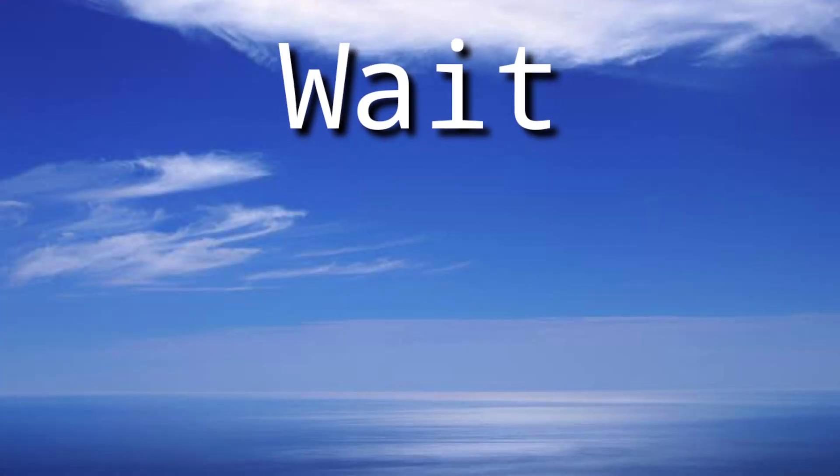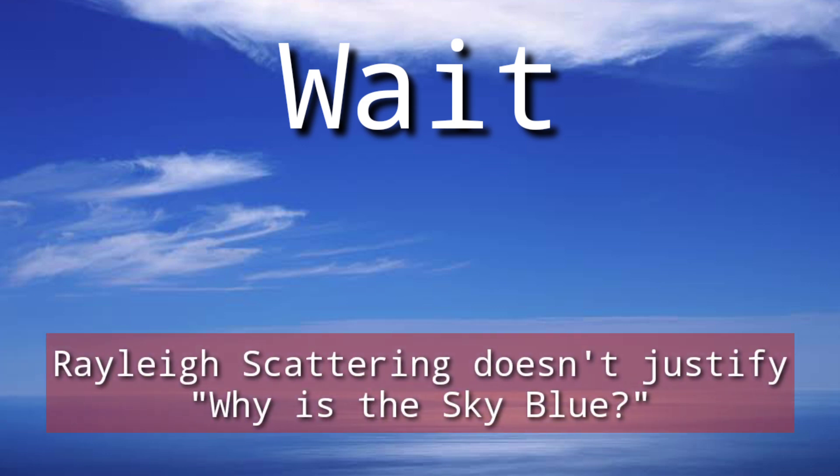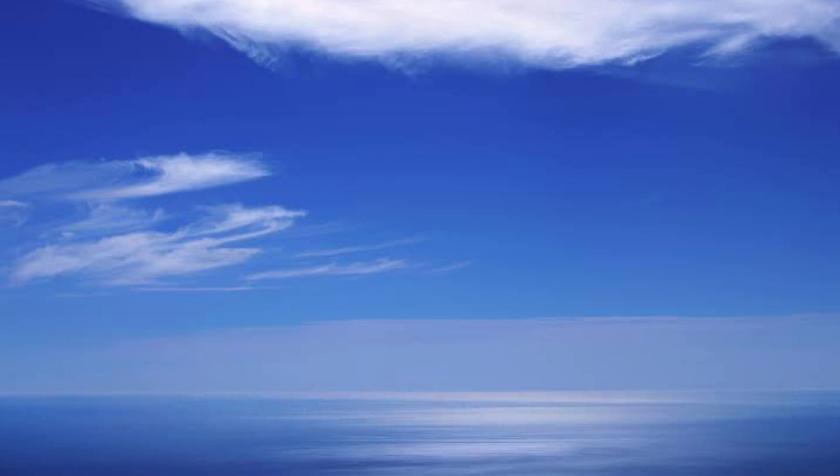Wait, this isn't the whole story. Rayleigh scattering still doesn't justify why the sky is blue. In fact, violet light has shorter wavelength than blue light. So why isn't the sky violet instead?